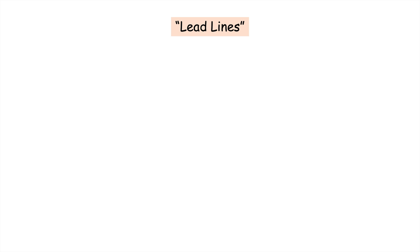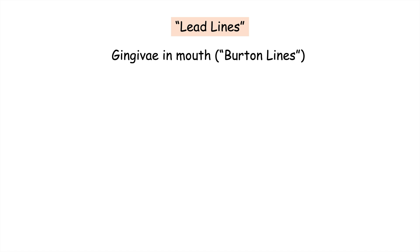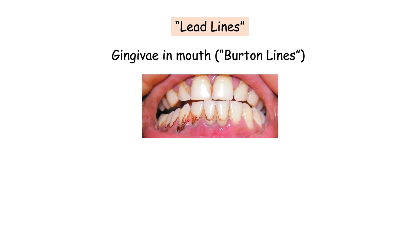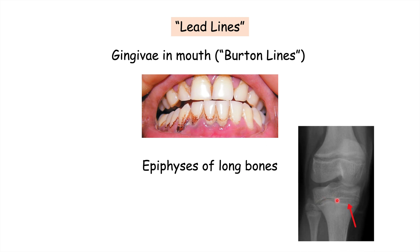Other important findings are lead lines. These include lead lines in the gingiva of the mouth — the gums — which are called Burton lines or Burton's lines. These are black-bluish lines visible on the underside of each tooth, and they are a sign of lead poisoning. Lead lines can also be seen on the epiphyses of long bones on imaging.